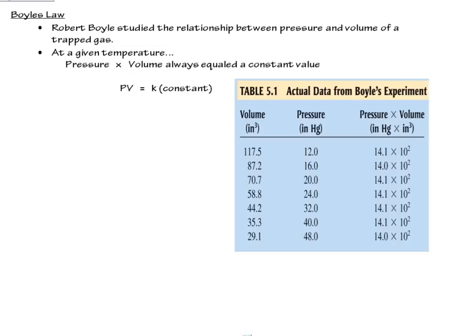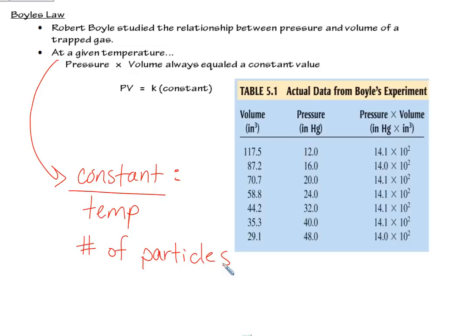There really are kind of four variables that affect gas behavior and properties of a gas. One of them is temperature, another one pressure, volume, and the fourth, we need constant number of particles.